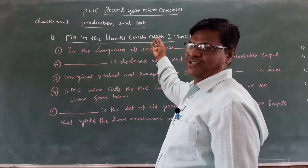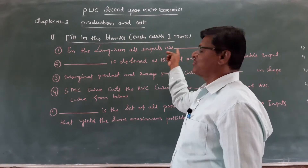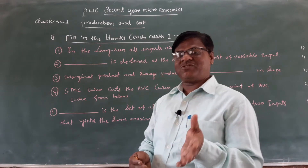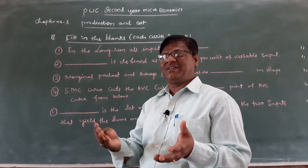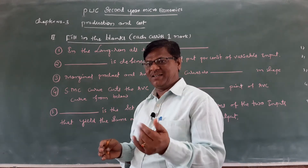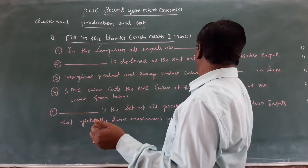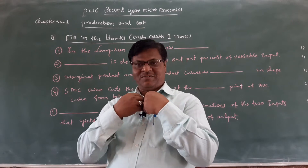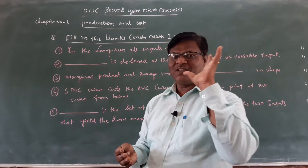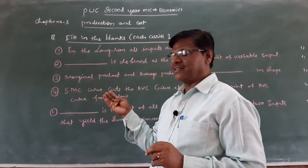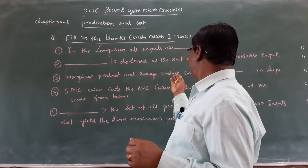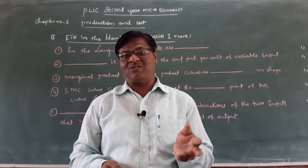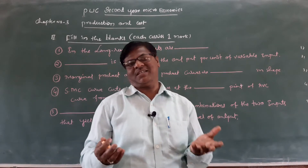Fill in the blanks — each question carries one mark. Question 1: In the long run, all inputs are dash. Question 2: Dash is defined as the output per unit of variable input — is it marginal product or average product? Question 3: Marginal product and average product curves — what is their shape? Are they U-shaped or inverse U-shaped?